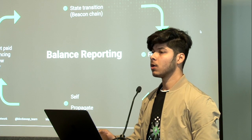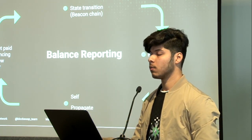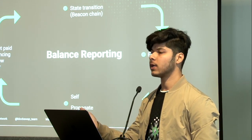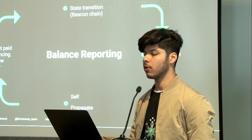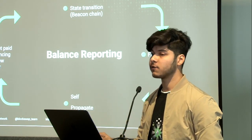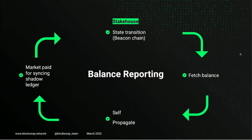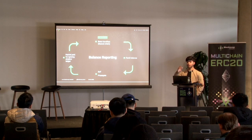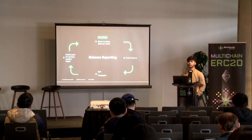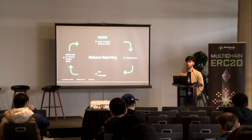Basically, the state transition — meaning from the consensus layer or the beacon chain as it was called — allows you to fetch any validator's status. Say I want to balance report a validator. First I'll go to the consensus layer and ask what the status of a validator is. Once I get that status, I fetch the balance. There's self-propagate, which means doing it yourself. And there's an entity called deposit router, which does most of the verification mechanism. The deposit router makes sure that the report you're providing from the consensus layer is actually valid. Once the validation is done, it is sent to the execution layer — our smart contracts on the execution layer.